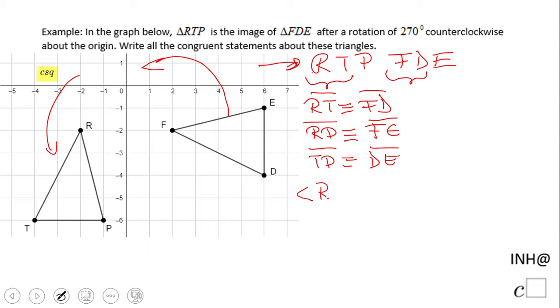Also, this one is going to say angle R congruent with angle R, yeah those are corresponding angles. Angle T is congruent with angle D. Angle P congruent with angle E. And the final statement will be about these two triangles.